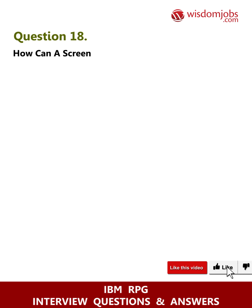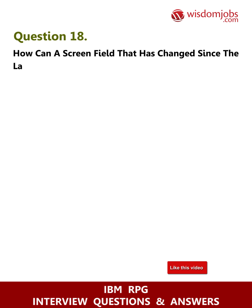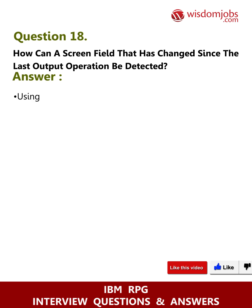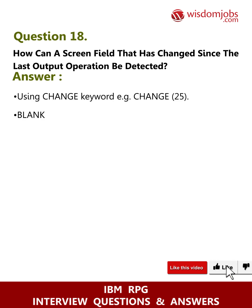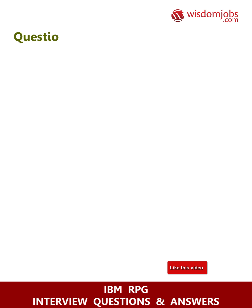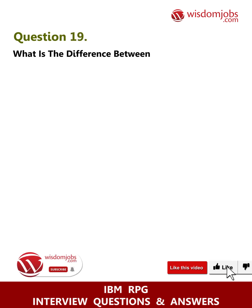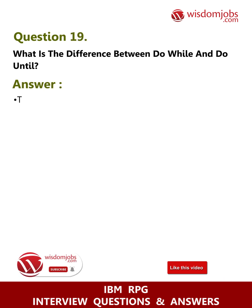Question 18: How can a screen field that has changed since the last output operation be detected? Answer: Using the CHANGE keyword. Example: CHANGE(25) blank for numeric field.